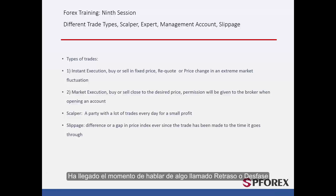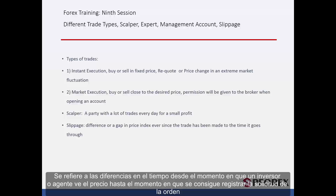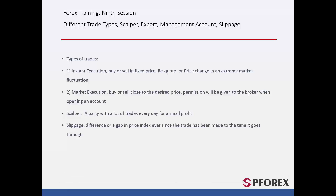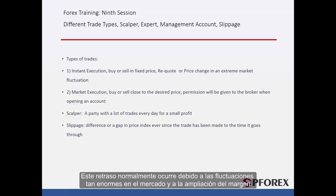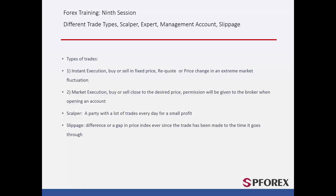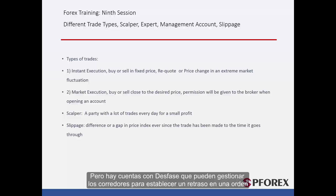It is now time to talk about something called delay or slippage. It refers to the time difference from the moment an investor or trader sees the price to the time that the order request is registered for them. This delay usually happens due to enormous market fluctuations and spread widening. But there are accounts with slippage that brokers can manage to establish a delay on an order. This is only possible for some traders with special accounts.